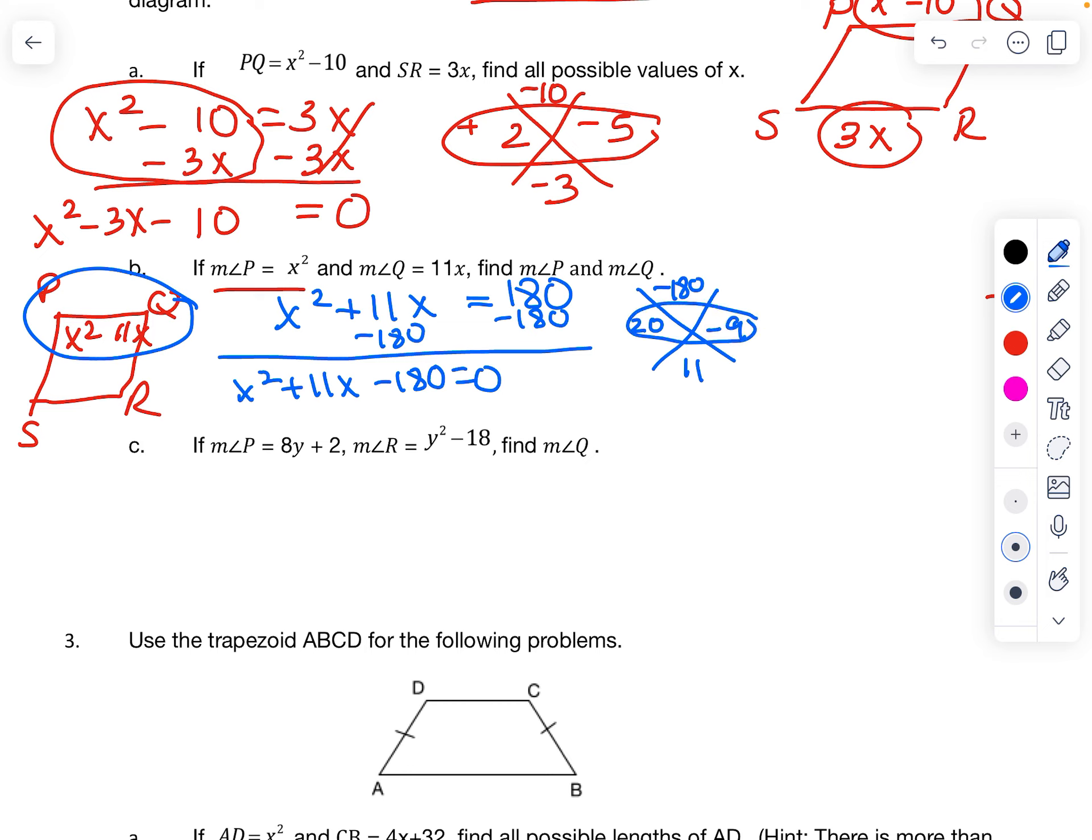Multiply to negative 180, add to 11. So let's set up our parentheses. x plus 20, x minus 9 equals 0. And then remember, take each one set to 0. So minus 20, minus 20. So x equals negative 20 is one. And then add 9, add 9. x equals 9 is the other one.